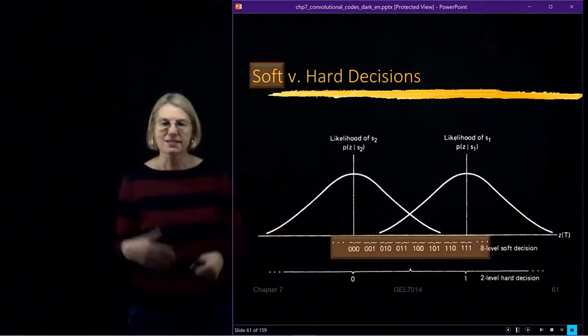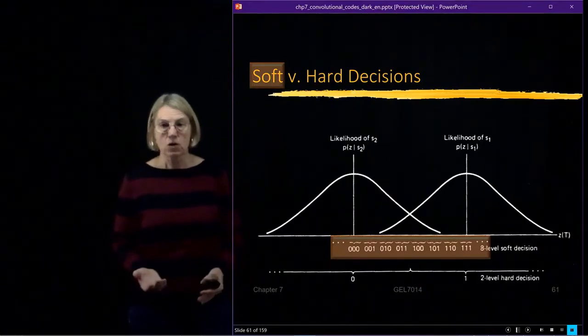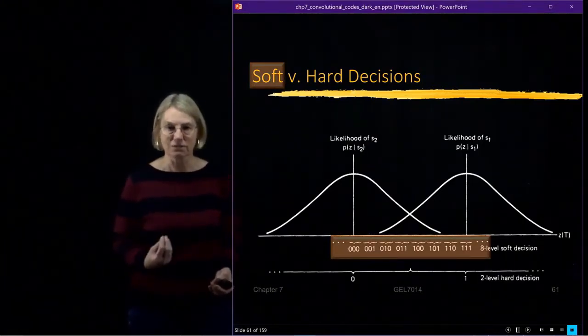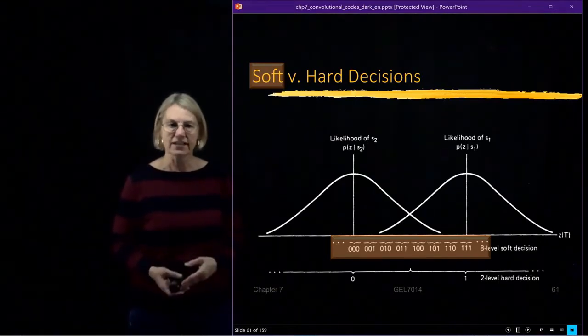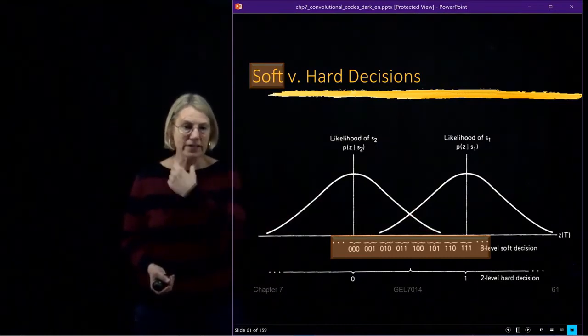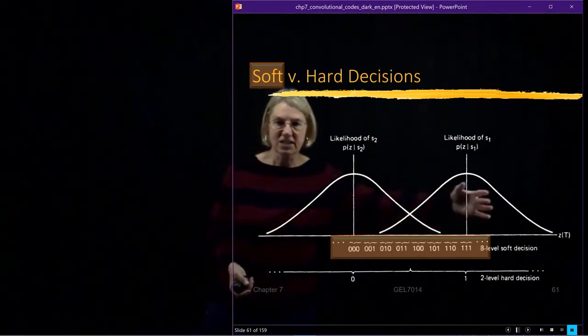Now, let's suppose that instead I'm doing soft decisions. Well, it's a soft decision, but I'm still going to quantize the soft decision. So for instance, I can get a 3-bit quantization of the soft decision. That means that I'm going to divide the received signal.